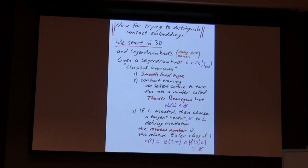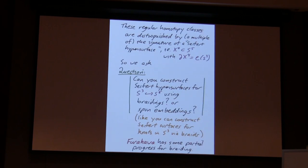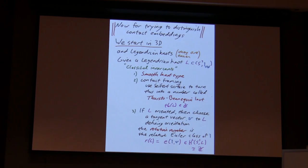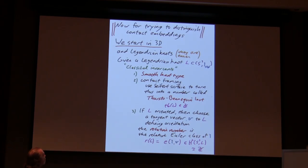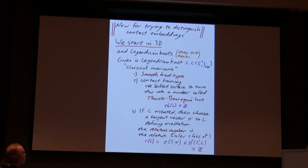So that was all I was going to say about the general question. Let's move on to trying to isotope contact embeddings from one to the other. Suppose we have two contact embeddings — when can we isotope one to the other through contact embeddings? As I've done throughout the lectures, I'd like to go back to the three-dimensional setting and remind you how this works there, because we understand the situation quite well there, not completely but quite well. We'll see what techniques we use in the three-dimensional setting, in the hopes that maybe we can generalize some of those to study the higher-dimensional setting.